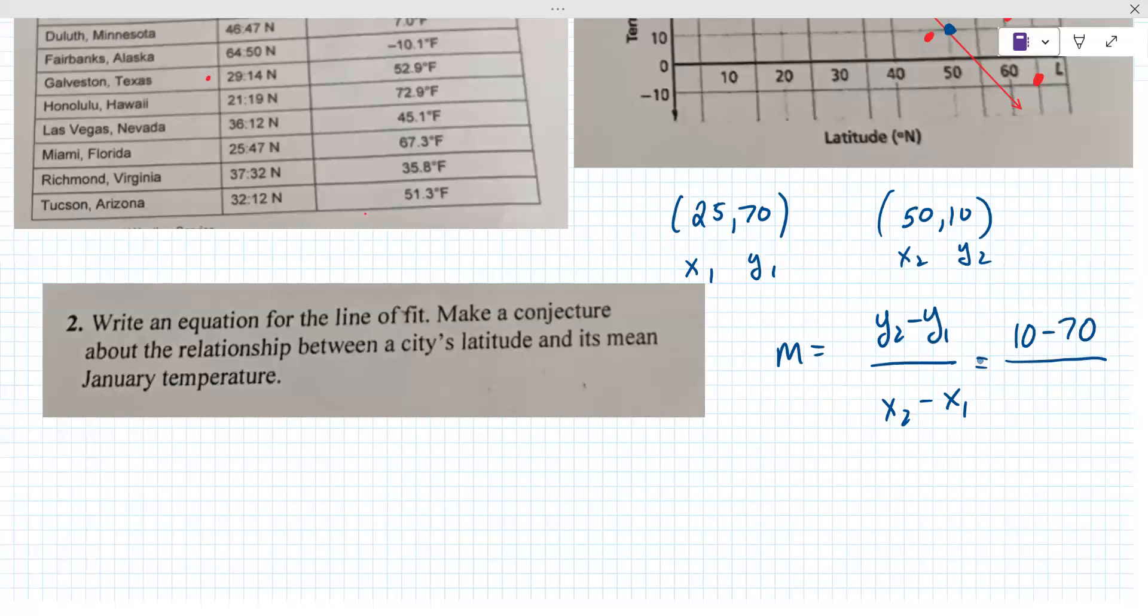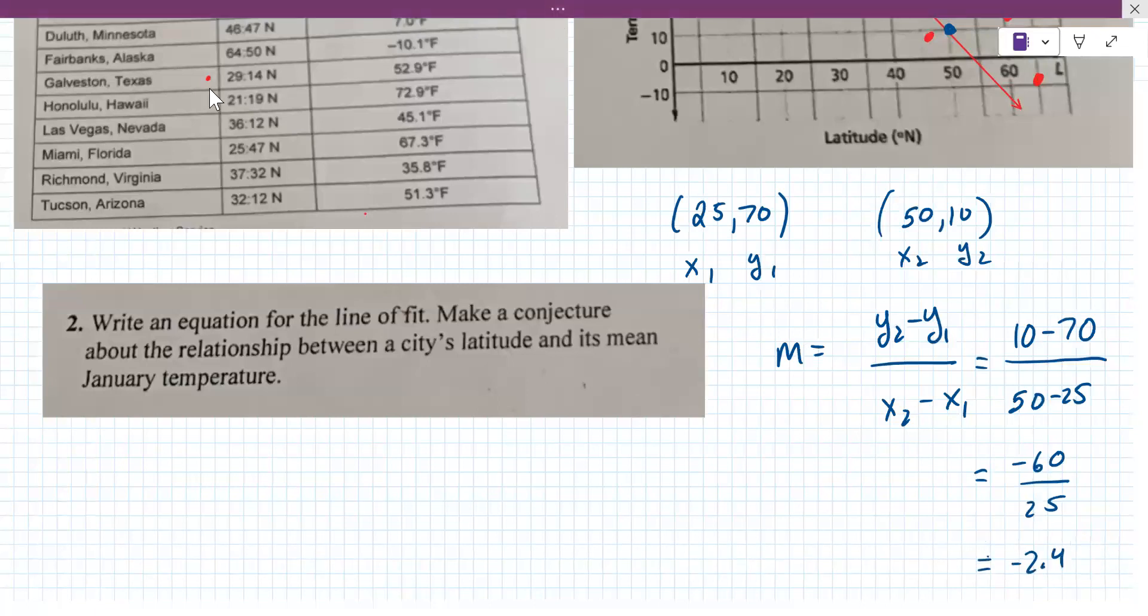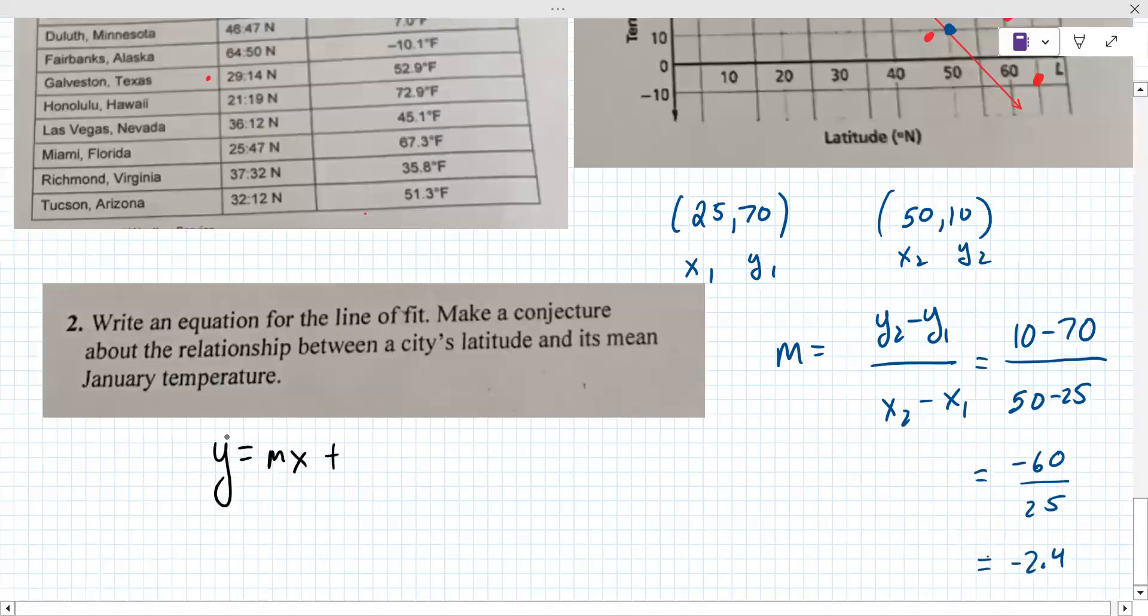So again, Y2 minus Y1 over X2 minus X1. X1, Y1, X2, Y2. And so now we've got to put these values into the equation. So 10 minus 70 over 50 minus 25 ends up being negative 60 over 25. And if you got a moment there, whenever you're caught up, I'm going to put that in the calculator and let me know, negative 60 divided by 25. Negative 2.4. Okay. Good. So when we write our equation, Y equals MX plus B, we have the slope. The slope is minus 2.4. That's why it's so important to calculate it that way. We've got it.